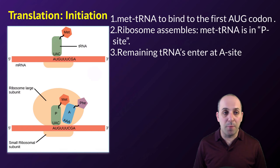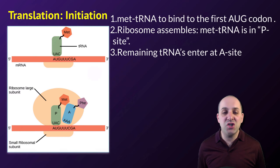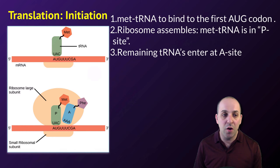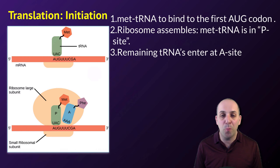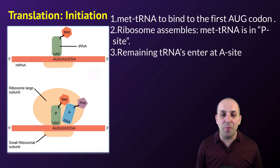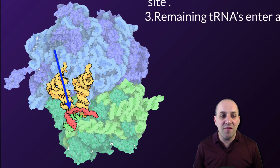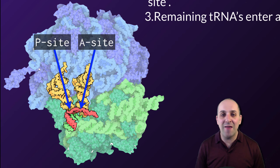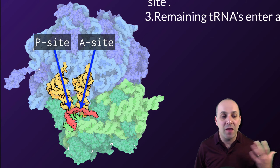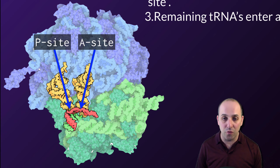Let's look at the process of translation up close. There are three major steps to translation. The first step is the initiation step. The initiation step involves the ribosome forming around the mRNA transcript so that the first AUG codon in the transcript is in the appropriate place in the ribosome, what we refer to as the P-site. After this initial assembly, all other incoming tRNAs are going to enter next door to the P-site in the ribosome at what is called the A-site. In this computer-generated graphic, you can see the P-site and the A-site regions of the ribosome and two different tRNA molecules occupying those two different regions.